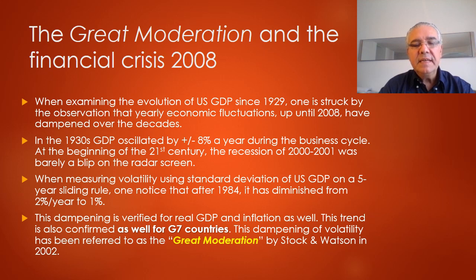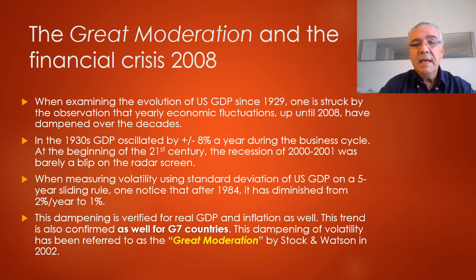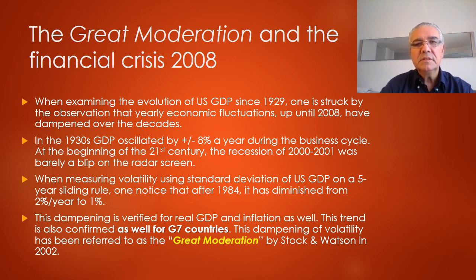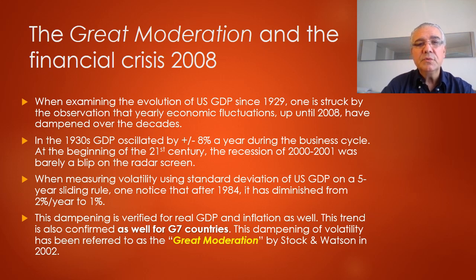This dampening is verified for real GDP and inflation as well, and is also confirmed across G7 countries. This phenomenon of dampening economic oscillations in the business cycle has been referred to as the great moderation by economists Stock and Watson in 2002.